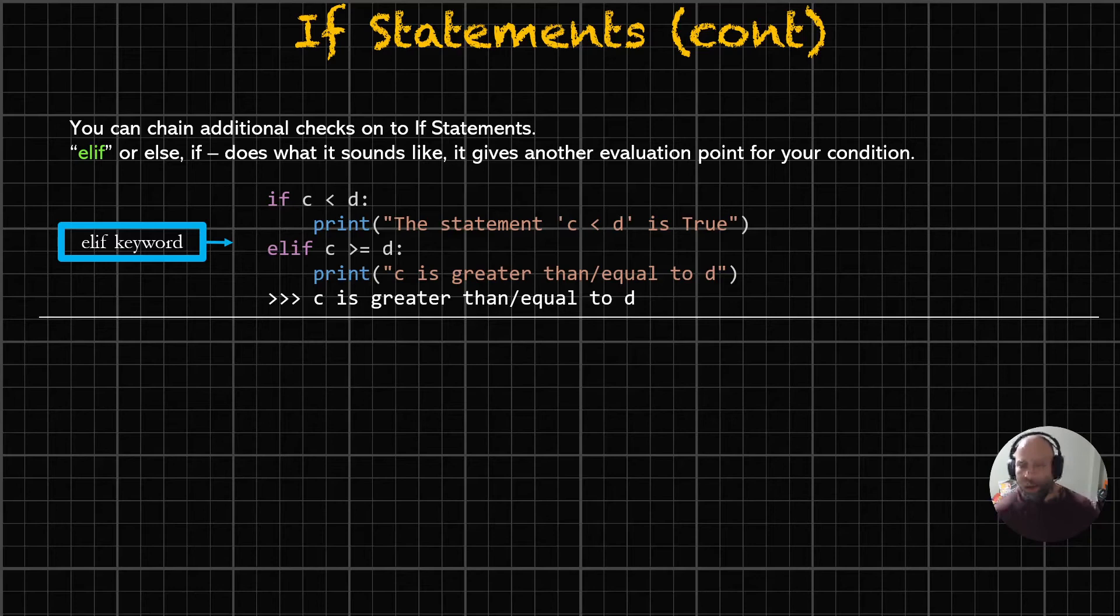And we're saying, alright, elif or else if c is greater than or equal to d, print c is greater than or equal to d. Well, if it's not less than d, then it's got to be either greater than or equal to. So presumably, that's true. And of course, the response is c is greater than or equal to d. So elif gives us another checkpoint, another way to evaluate a condition on values that we have. But it doesn't stop there.